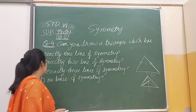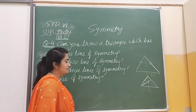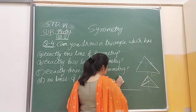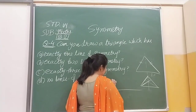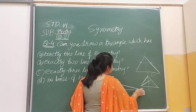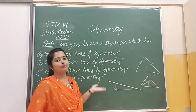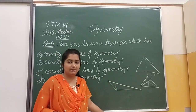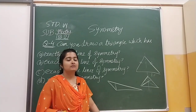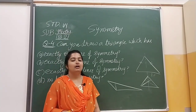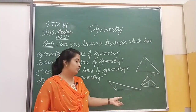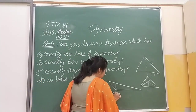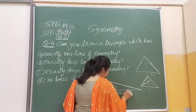Then we have given: no lines of symmetry — that is a scalene triangle. If we are drawing a scalene triangle, that is an example of no lines of symmetry. Suppose maine aisa triangle draw ki hai — is triangle ko mein kisi bhi angle se bend karoon, mujhe same shape nahi milegi, woh overlap nahi hoga. So that is an example of no lines of symmetry. No lines of symmetry mein humhe kaunsa example de sakte hain — that is a scalene triangle.